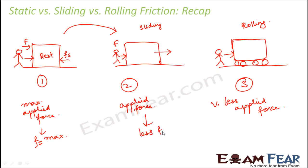In the first case you have maximum friction, in the second case you have less friction, and in the third case you have minimum friction. Since you have minimum friction, you have to apply minimum force to move the object. That is why it has become very easy to transport objects from place to place - you just put wheels on heavy objects and reduce your effort. That is how wheels turned out to be one of the best inventions.